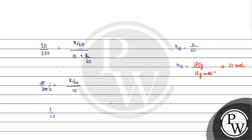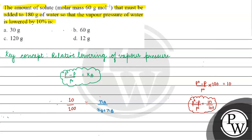So 1 upon 10 equals x by 60 divided by 10. The 10s cancel, giving us x equals 60 gram. The correct answer for this question is option B, 60 gram. I hope you understood it well. Thank you and all the best.